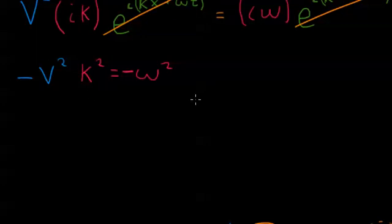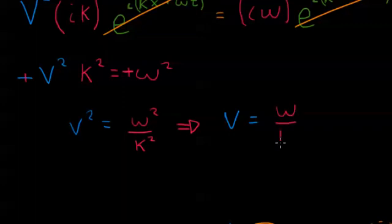And then we divide both sides by k. So we cancel out these negatives and we divide both sides by k squared. We get v squared equals omega squared over k squared. And then if we take the square root of both sides, we get v equals omega over k. And we'll put this in a box because this is the relationship between v, omega, and k.